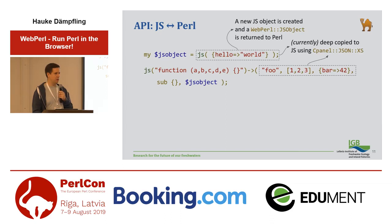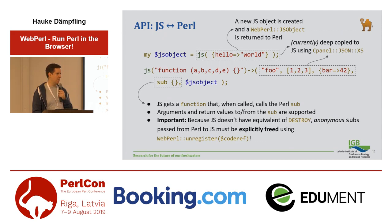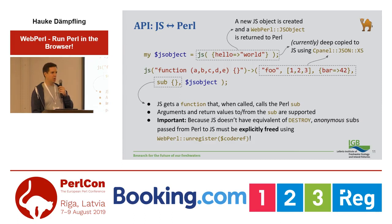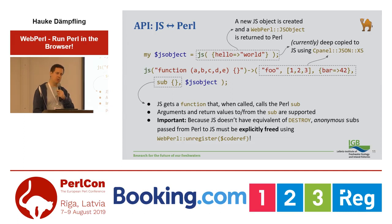The one exception to deep copying is code references. Perl code references — when you pass those to JavaScript, something interesting happens: what JavaScript gets is a new JavaScript function, and this JavaScript function, when you call it in JavaScript, will call back into the original Perl subroutine. This is important for things like callbacks — like when you click a button in JavaScript and you want to call back into Perl. This also supports both arguments to the subroutine and return values from the subroutine in the same way I've been describing.